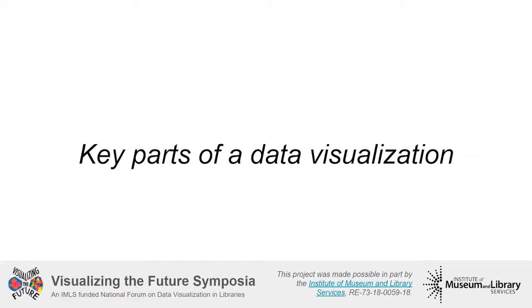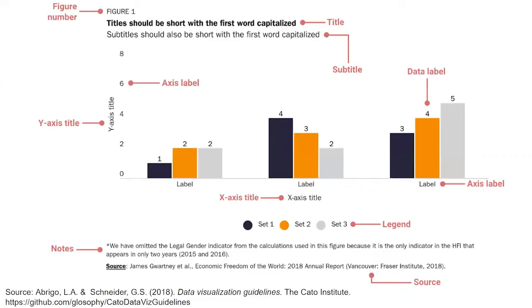What are the key parts of a data visualization? In this module, we will provide an overview of the key components that make up a data visualization: the content, title, axes, and the source of the data, and some tips and best practices for each component.